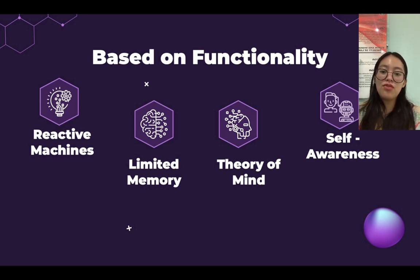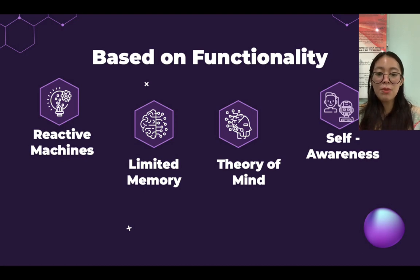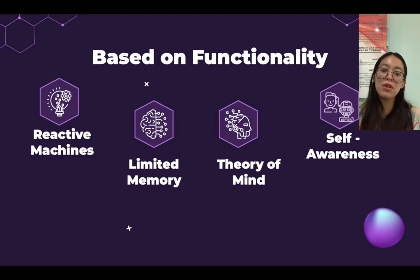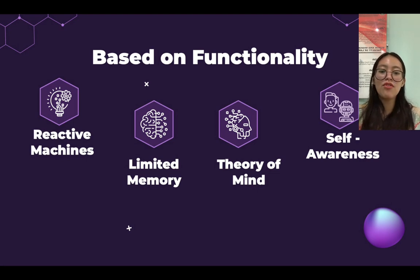The second type is based on functionality, which is divided into four. The first one is reactive machines. Purely reactive machines are the most basic types of AI. Such AI systems do not store memories or past experiences for future actions. They only focus on current scenarios and react as per the best possible action. Google AlphaGo is also an example of reactive machines.